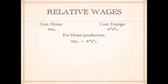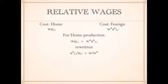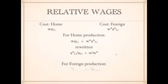In order to have production at home, the per unit cost of producing a particular item has to be less than it is in the foreign country. That can be rewritten as: if you take the unit labor requirement for a particular good in the foreign country and divide by the unit labor requirement in the home country, and that ratio is greater than the home/foreign wage ratio, then home production will occur. Conversely, for foreign production, the ratio of unit labor requirements has to be less than the wage rate ratio.